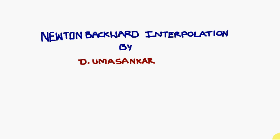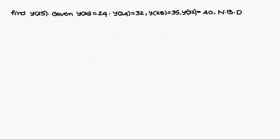Today we are going to discuss Newton backward interpolation. Find y of 25, given y of 20 is 24, y of 24 is 32, y of 28 is 35, y of 32 is 40, using Newton backward interpolation.